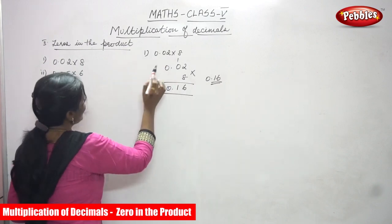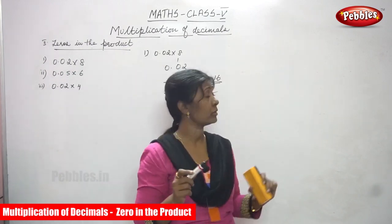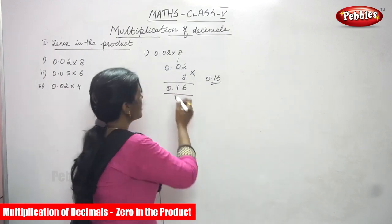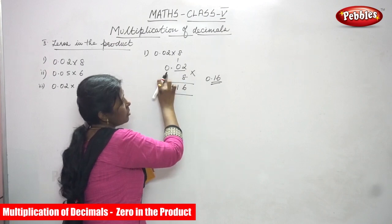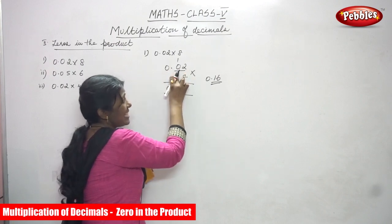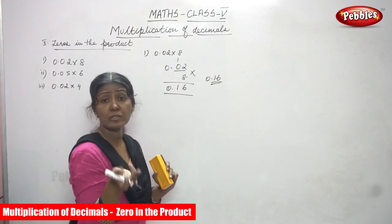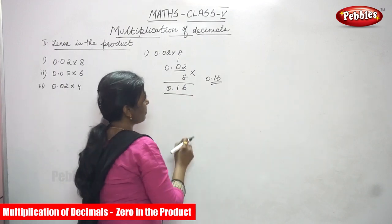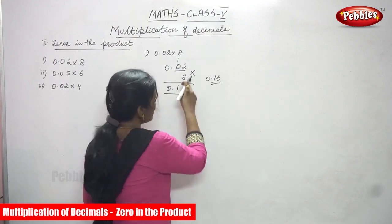So again I will repeat 0.02 into 8. So 0.02. The first one is 0.02. So after the point we can call it as a decimal. This is the whole number. So 0 is the 10th place and 2 is the 100th place. 8 multiplied by 8 is a whole number. So we have to multiply. So 8 twos are 16. We must say the 8th table. So 8 twos are 16.